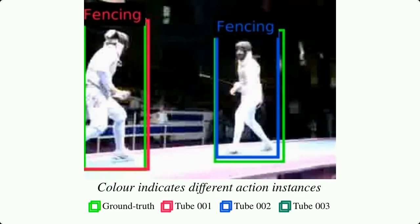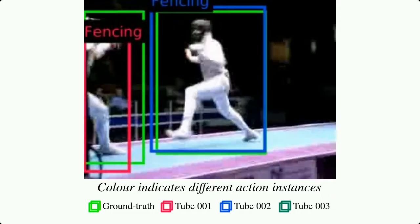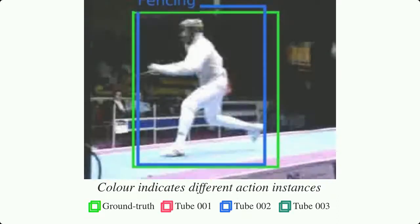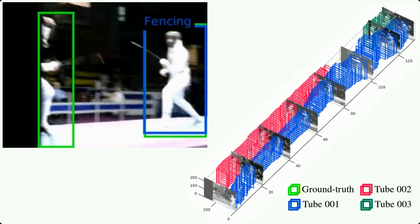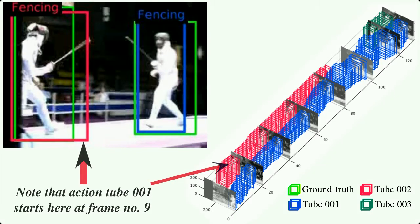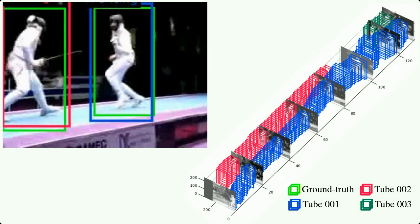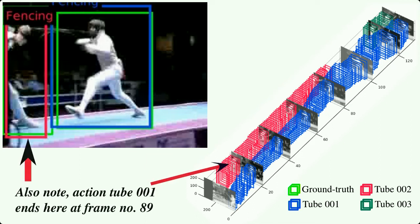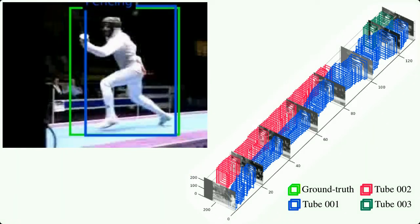First, UCF101 — a fencing video sequence in which each predicted action instance is drawn in a different color. A total of three action tubes are detected in this sequence, as can be seen by plotting the tubes in 3D. Notice that one of the fencers moves out of the image boundaries, to which our model responds by terminating action tube 1 and initiating a new action tube 3.